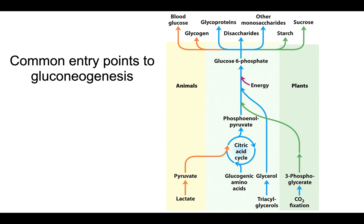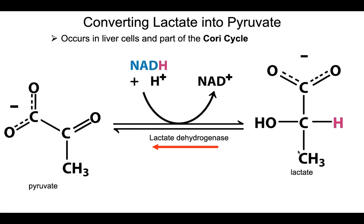There are several common entry points into gluconeogenesis. When a cell decides it needs glucose badly and doesn't have enough storage, there are several ways to do it. In plants, there is CO2 fixation that animal cells don't have — we'll talk about that later. The glycerol from triacylglycerol fats can be used, as can lactate and amino acids. Lactate can be taken and oxidized using NAD+ into pyruvate using lactate dehydrogenase — this is just the reversal of fermentation.